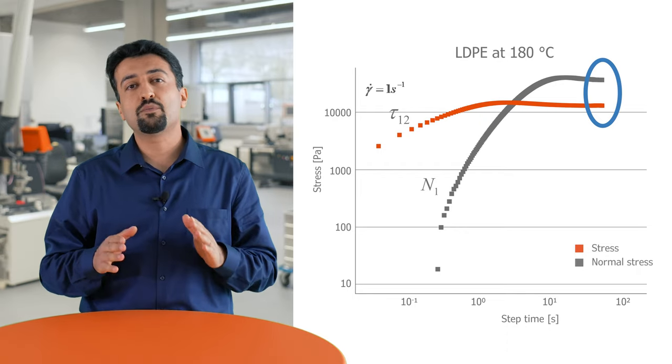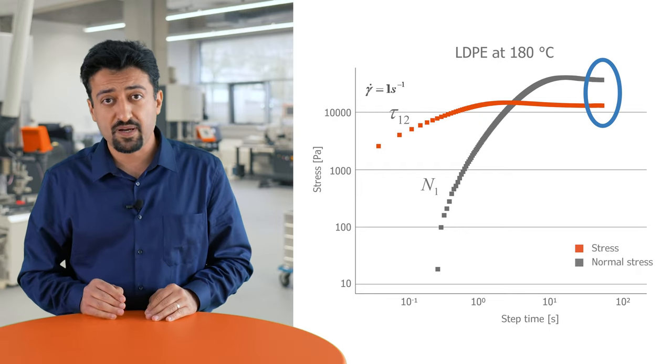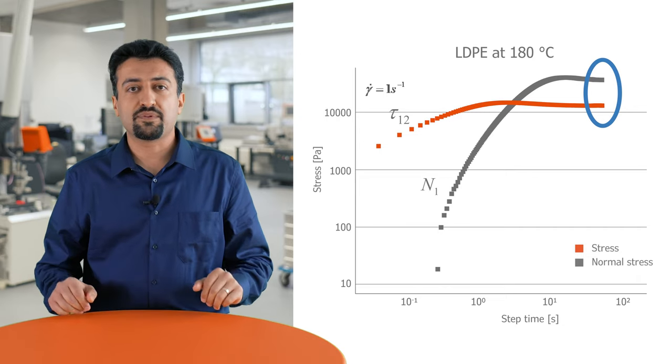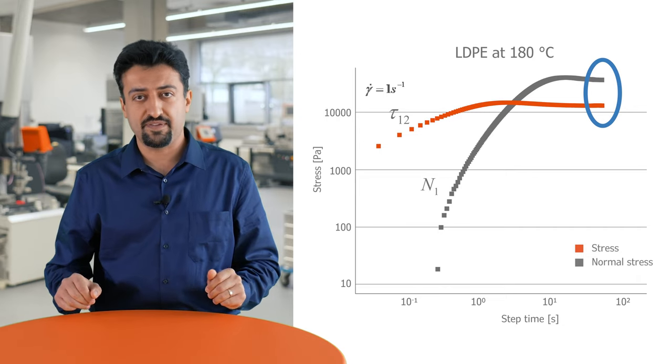However, the maximum reachable shear rate in this experiment is around 30 per second for polyolefins. This shear rate is much lower than the shear that the material experiences during polymer processing operations such as extrusion or injection molding.